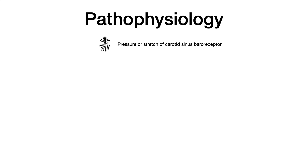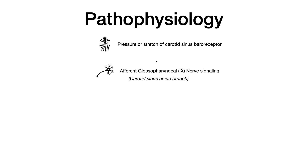So let's start with how this works. Pressure or stretch is applied at the carotid sinus baroreceptor, and when that is sensed, afferent glossopharyngeal nerve signaling occurs. It's really important to know that this is cranial nerve 9, glossopharyngeal, and it's an afferent signal. The carotid sinus nerve is a branch of the glossopharyngeal nerve, and that's what literally innervates the carotid sinus.